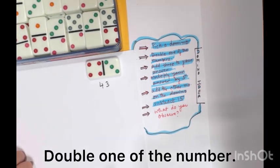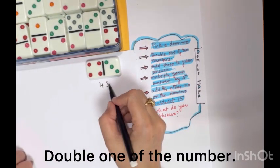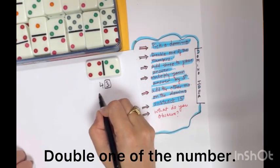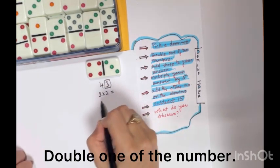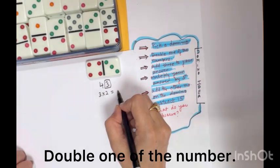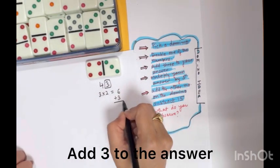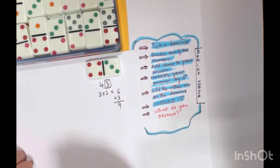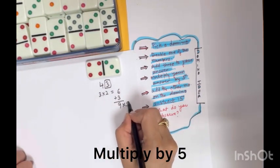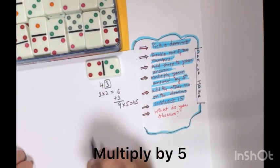The next step is we have to double one of the numbers, so I'm taking 3. Doubling 3 gives us 6. Then add 3 to this number, it gives us 9. Then multiply this by 5, it gives us 45.